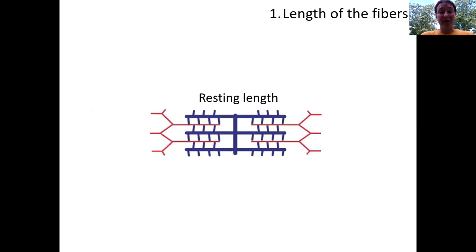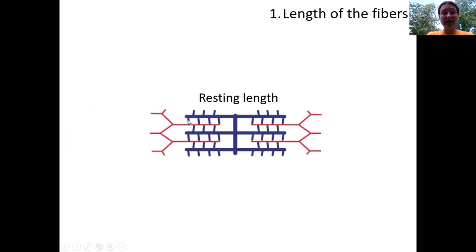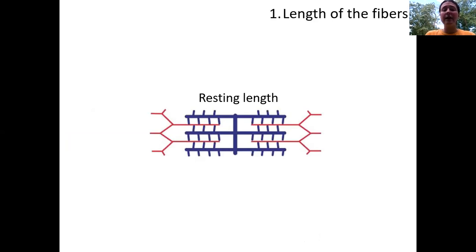Let's zoom into some sarcomeres to understand how length works. At resting length — the optimal length — there are a lot of opportunities for myosin to form cross bridges with actin, as long as the muscle has been stimulated. The zone of overlap is fairly large.